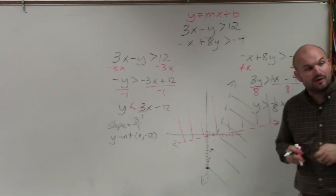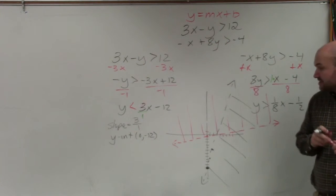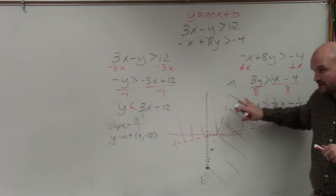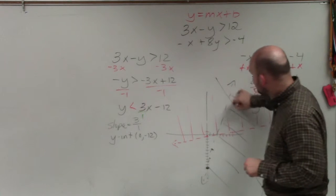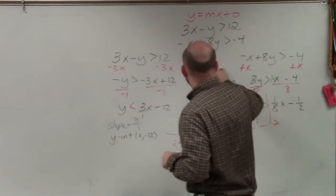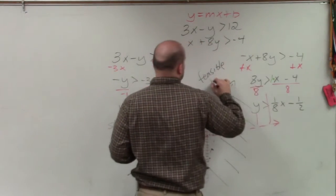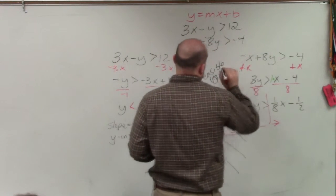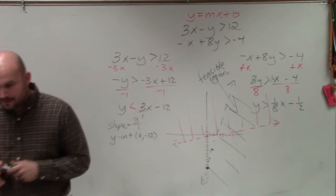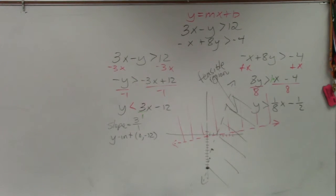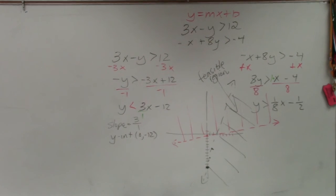So therefore, you're going to graph each of them separately. And what you guys will notice is there is a region where the two inequalities intersect. And that region is what we call the feasible region. But you're going to graph. You're going to make sure you shade for both of them. Anybody have any questions on that?